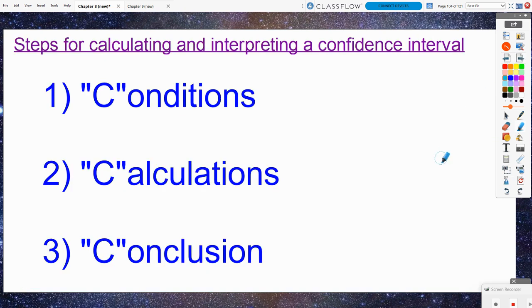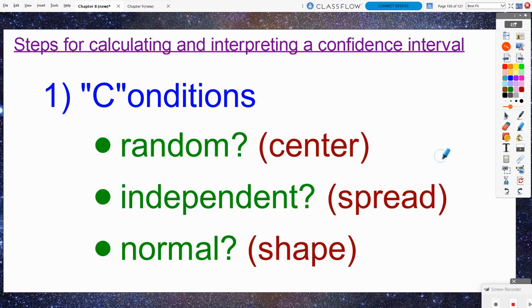We need to follow the three C's like we did when this was a one sample problem. We've got our conditions, we need to do our calculations, and we need to write our conclusion. Our three conditions: the random, independent, and normal conditions.